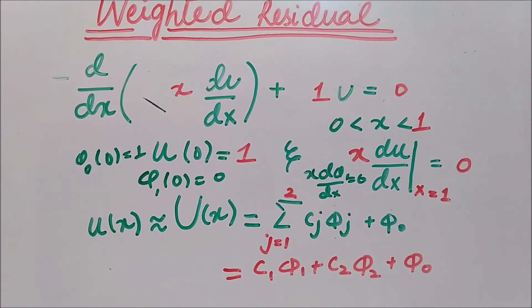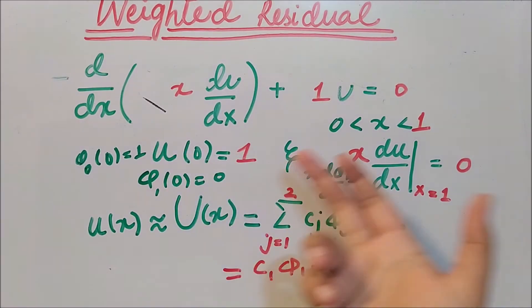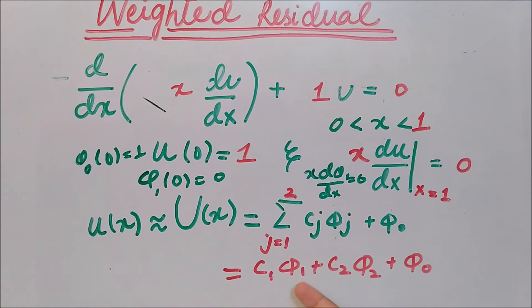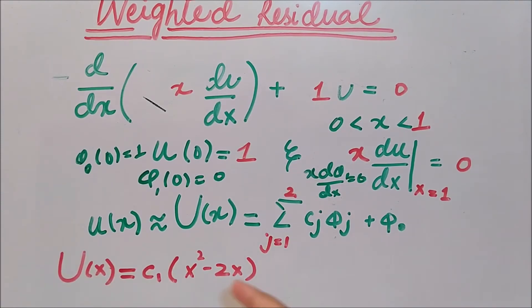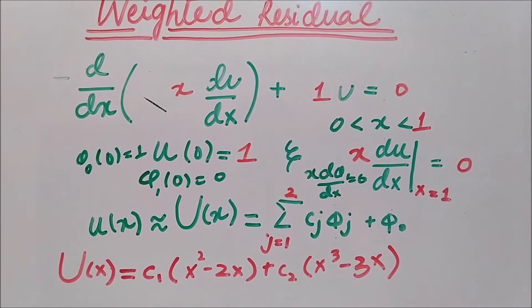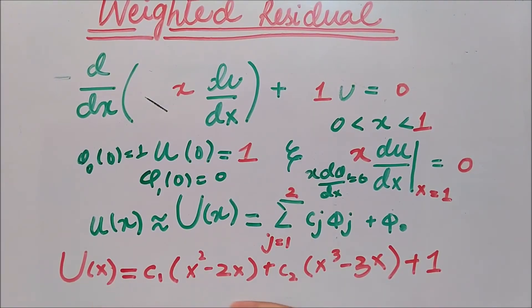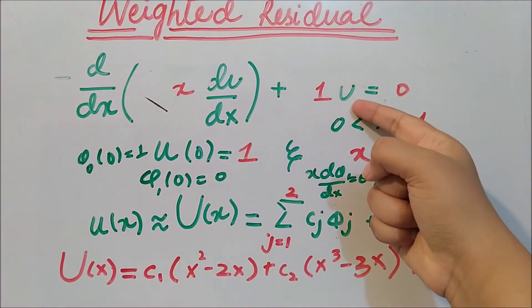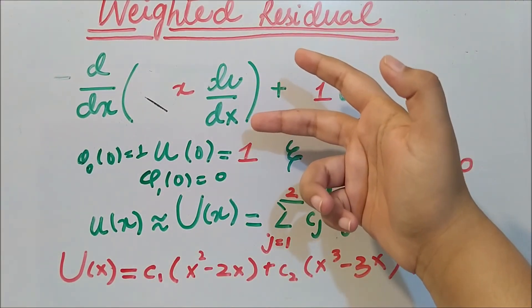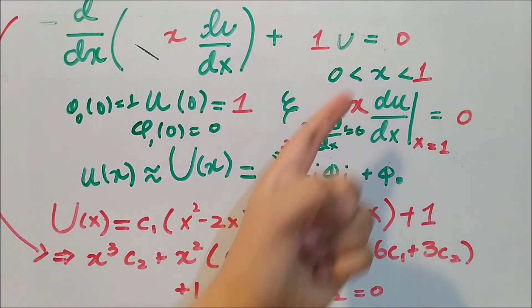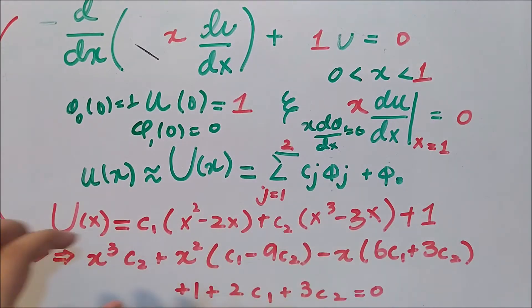Assuming specific functions that satisfy these conditions: let φ1 = x² - 2x, φ2 = x³ - 3x, and φ0 = 1. We now have our approximate function and we need to plug this u(x) into the differential equation to approximate the solution.